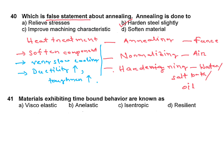Next question: options are C, isentropic and D, resilient. The answer is viscoelastic material, which shows time-bound behavior. Viscoelastic.